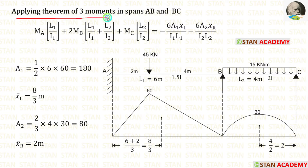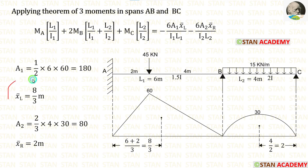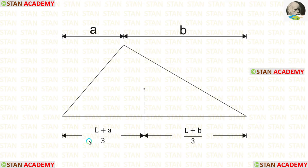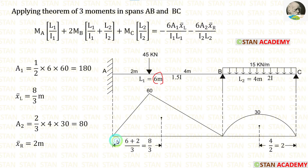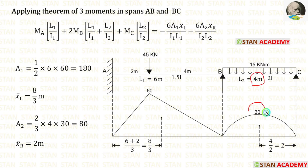Now let us apply the theorem of three moments in spans AB and BC. For the triangle in span AB, we have already calculated the area as 180. Now we calculate the centroid towards the left side. The formula is (L + A) / 3, where L = 6 m and A = 2, giving x-bar left = 8/3. The area formula for a second degree parabola is (2/3) × breadth × height. The breadth is 4 m and height is 30, giving area A2 = 80.